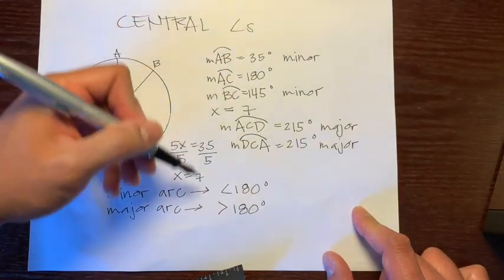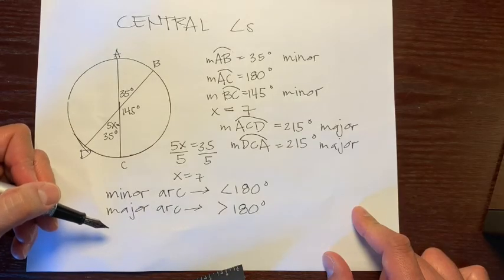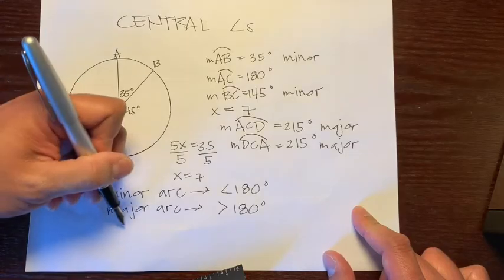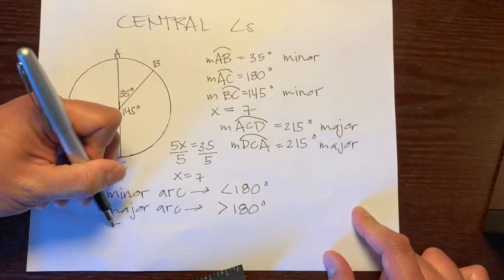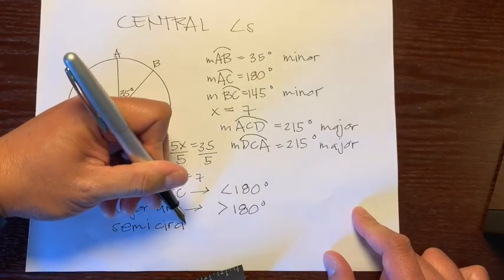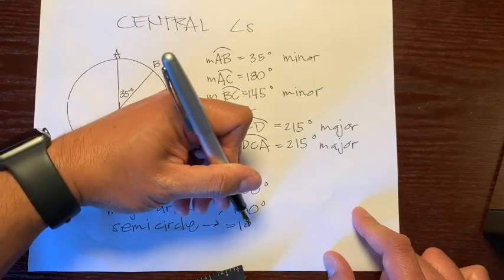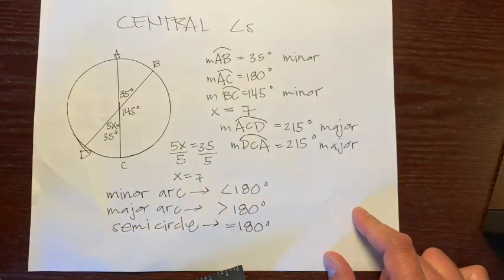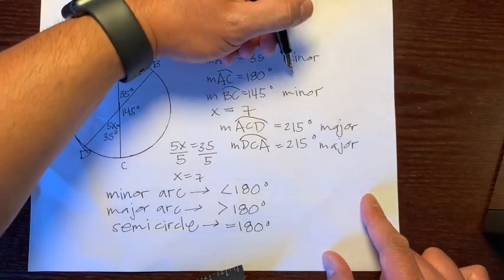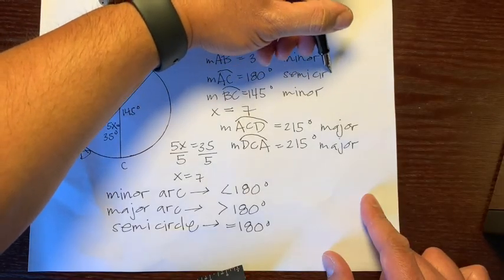So what are you missing? This one 180 degrees. We have the less than, which is a minor arc. We have the greater than, which is a major arc. But what about the equal? So that would be called a semi-circle. And that would equal 180 degrees.